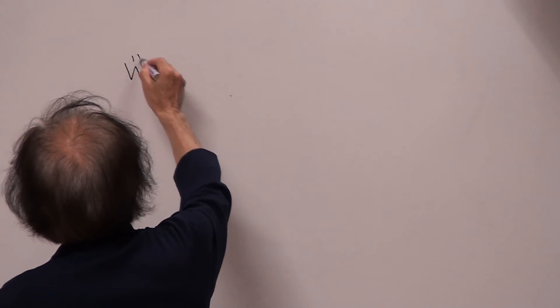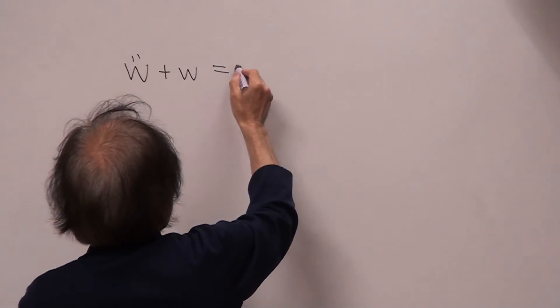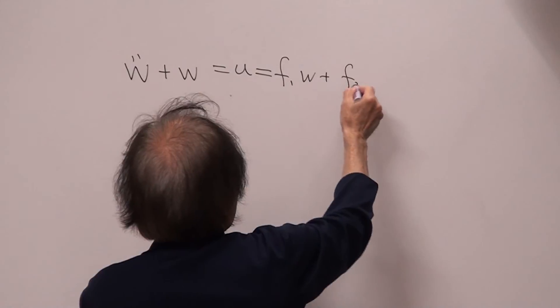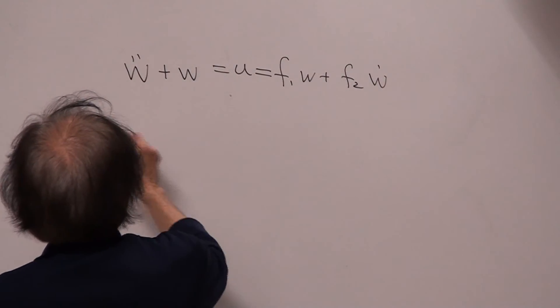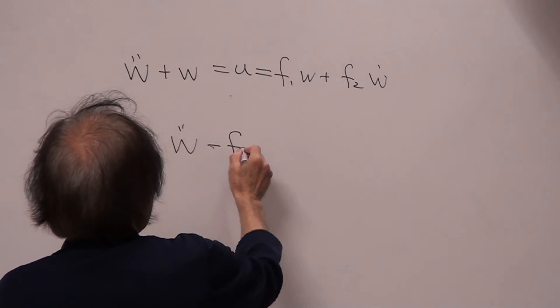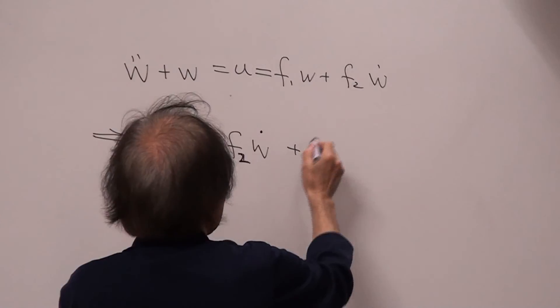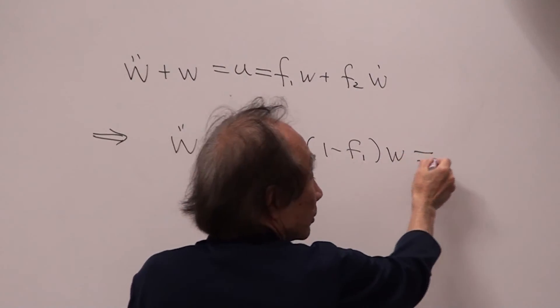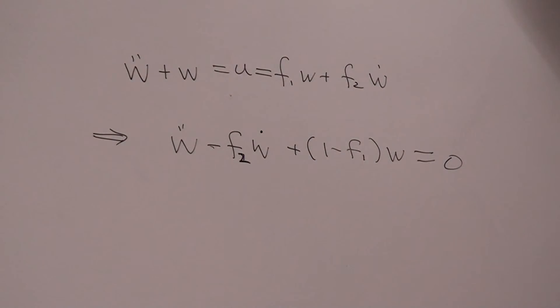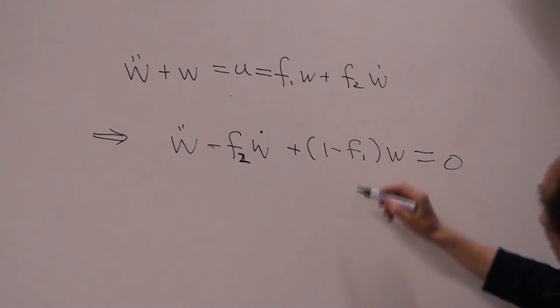Then my closed-loop system, the closed-loop system will be, you put u back there. This is very simple concept. W double dot plus w equal to u equal to F1 w plus F2 w dot. Right? And that means I have w double dot minus F2 w dot plus 1 minus F1 times w equal to 0. Right? That's my closed-loop system. So this is, this we call closed-loop system, because I already substitute my control force in there.